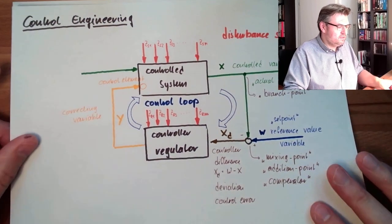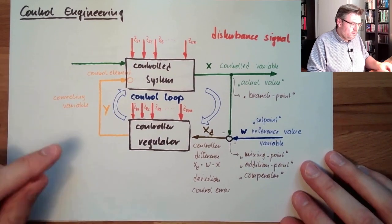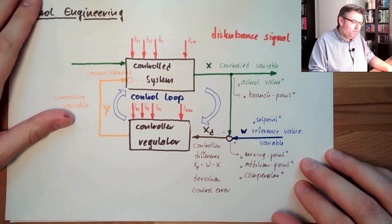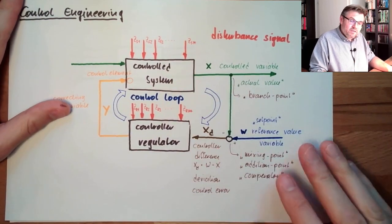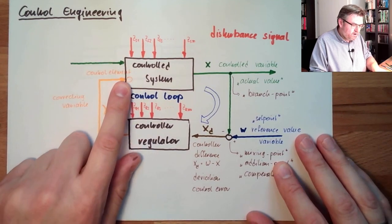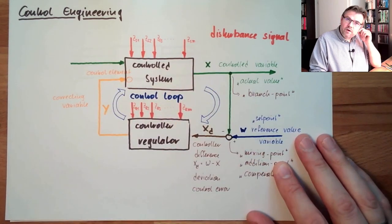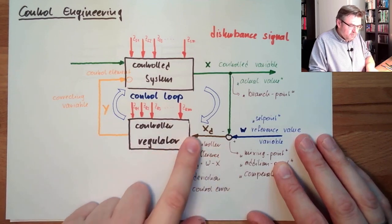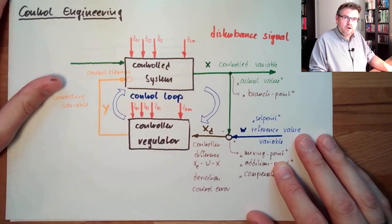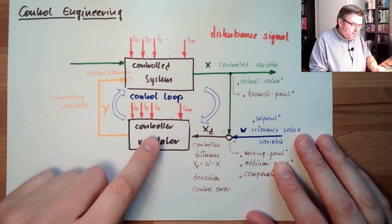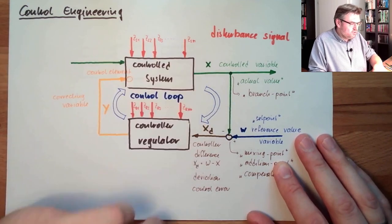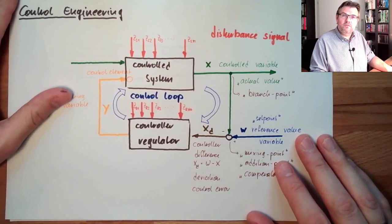And now, let's come back to this control engineering here. If we take a look at the controller or the control system, we can think about this as a transfer element. The control system has as input something, and the correcting variable, and as output the control variable. And the controller has as input the controller deviation, and as output the correcting variable. If I look into this as transfer elements, I could handle this control engineering with the help of transfer elements.